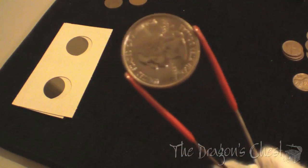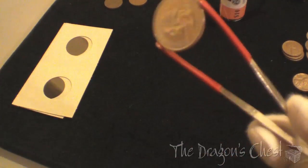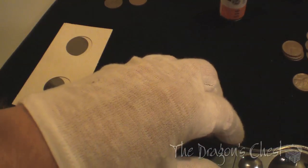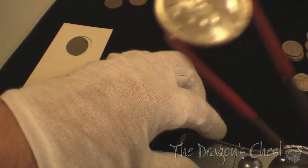What we want to do is inspect the quarter and make sure there aren't any particularly bad dings, contact marks, scratches, etc.